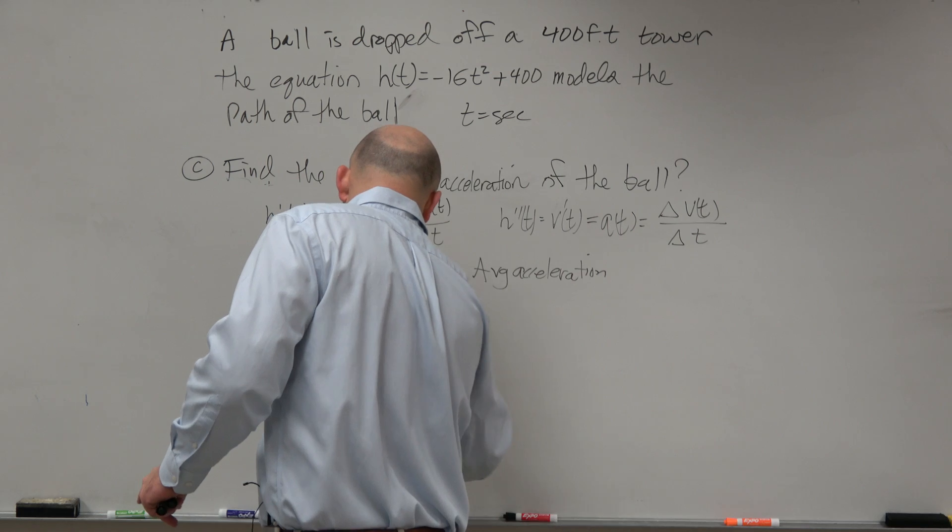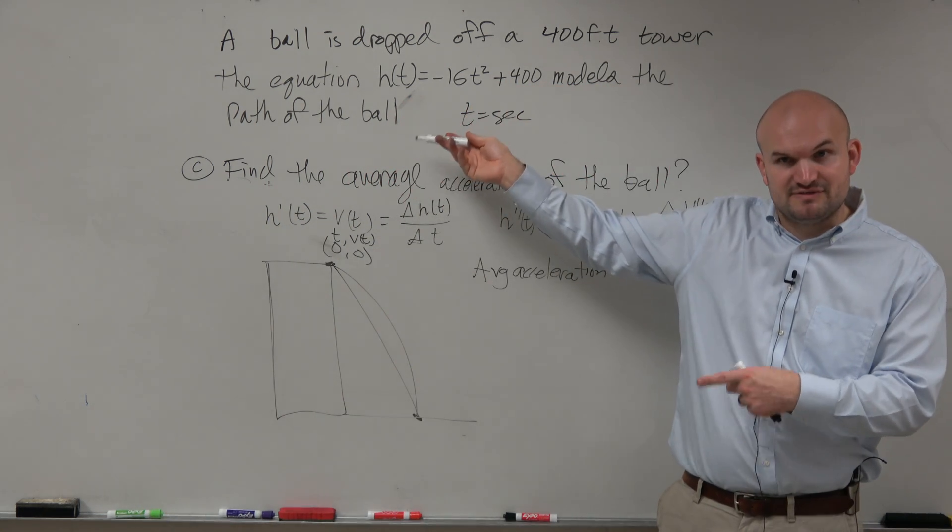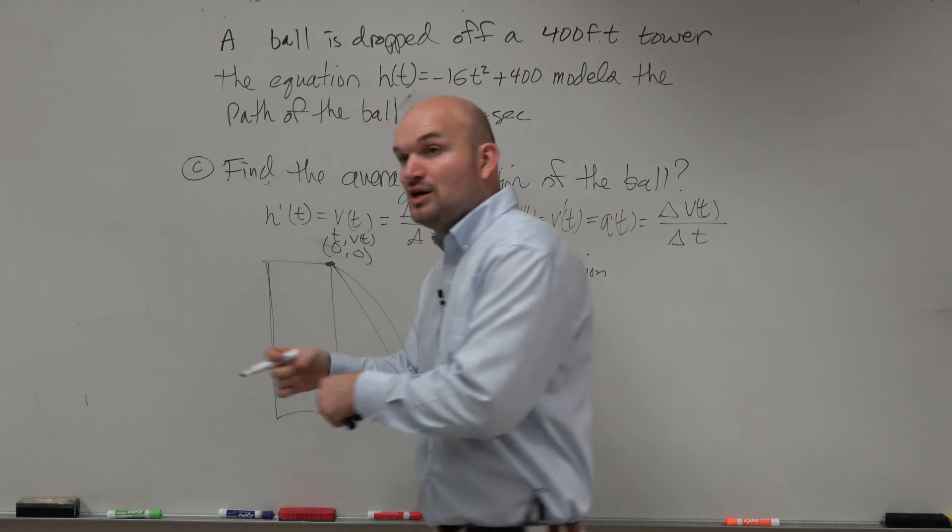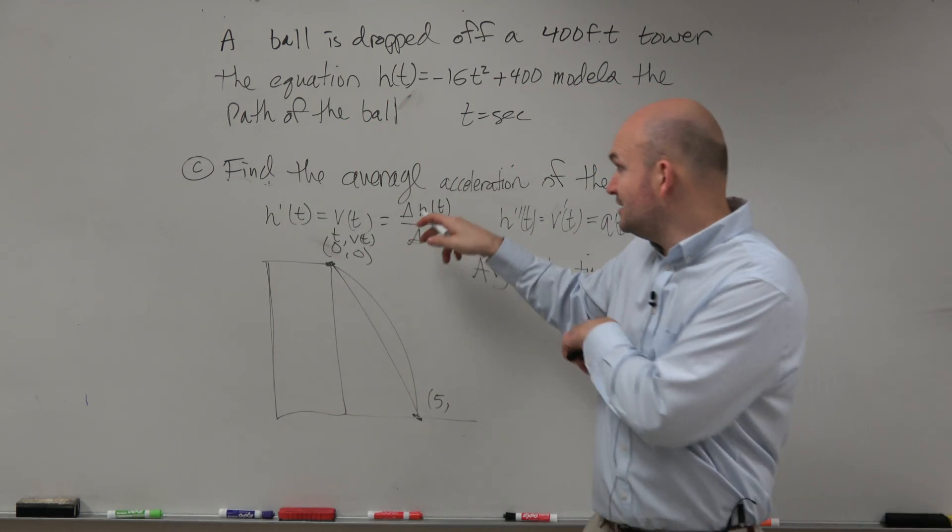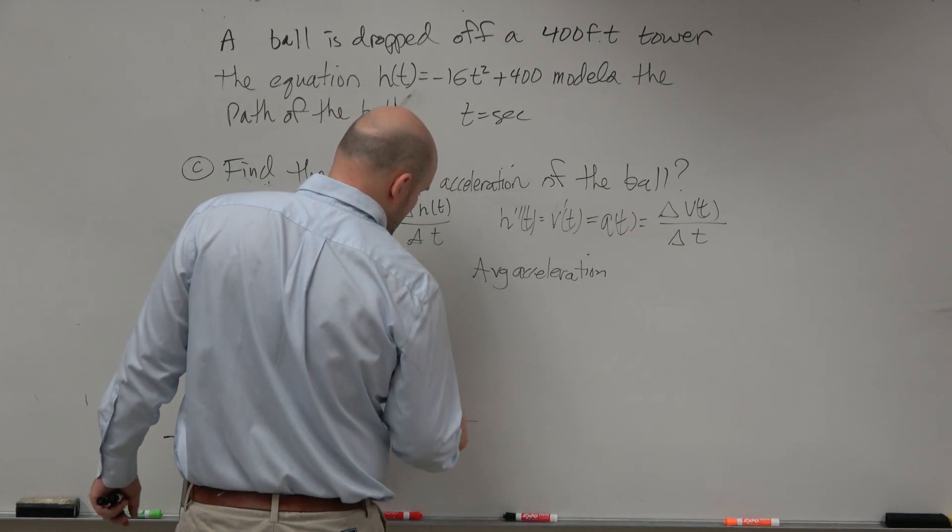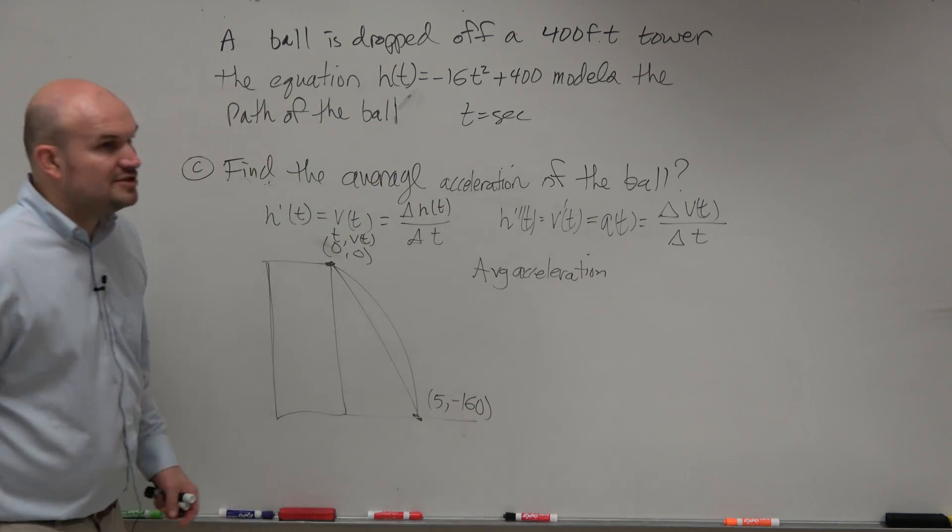Then let's move to the ending point. Remember how we found the time: we set h(t) = 0 and solved for time, which was 5. Then we plugged 5 into the velocity function by taking the derivative, and we got negative 160.